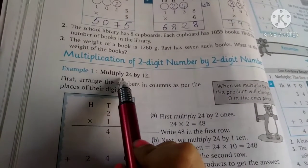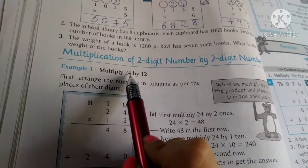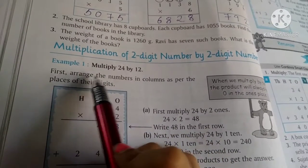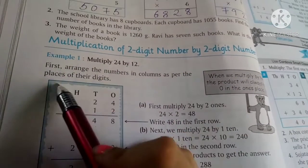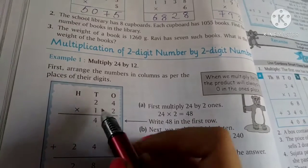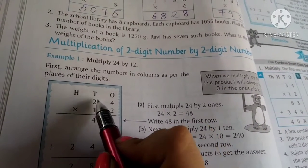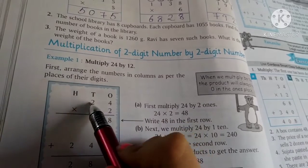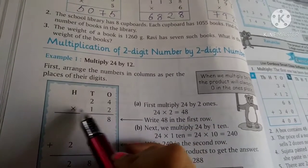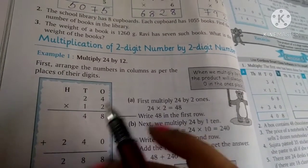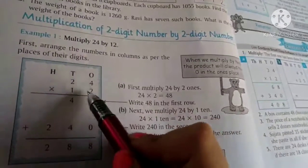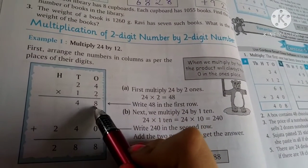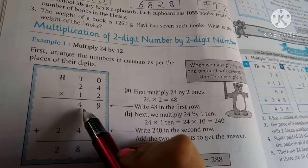These examples are from textbook page number 60. Example number 1: Multiply 24 by 12. First, arrange the numbers in the columns as per the place of their digit. We start by multiplying from the right.